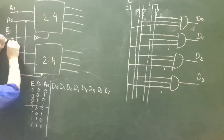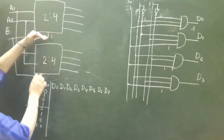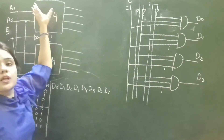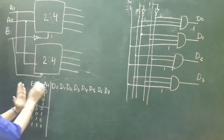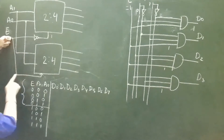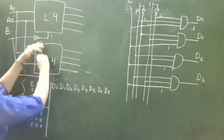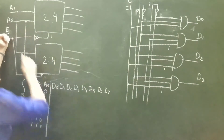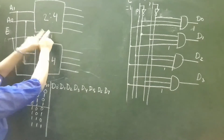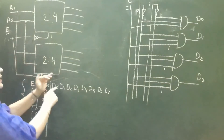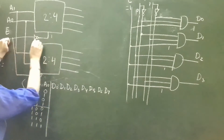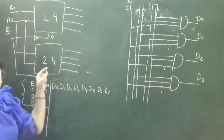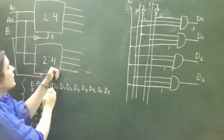When the value of E equals 0, complement of 0 is 1, so the enable input of the upper decoder is 1 and the upper decoder will be enabled. But 0 is going to the lower decoder, so the lower decoder will be disabled. When the value of E equals 1, complement of 1 is 0, so the upper decoder will be disabled. But the enable input of the lower decoder is 1, so the lower decoder will be enabled.